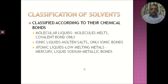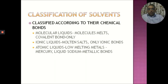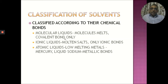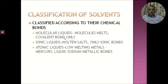Based on the nature of the solvent, solvents can be classified based on their chemical bonding: molecular liquids (covalent bonded systems), ionic liquids (molten salts, only ionic bonds), and atomic liquids (low-melting metals like mercury and liquid sodium, involving metallic bonds). These are the classifications based on covalent, ionic, and metallic bonding. Solvents can also be classified based on physical constants like melting point and boiling point — as high or low melting, high or low boiling.